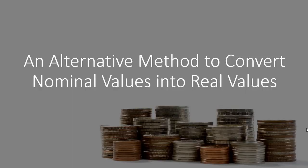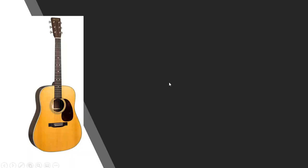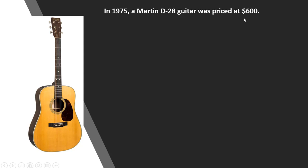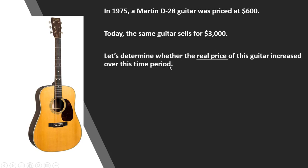In this video we're going to look at an alternative method to convert nominal values into real values — we're not going to use a consumer price index. In 1975 a Martin D28 guitar was priced at $600, and today the same guitar sells for $3,000. Let's determine whether the real price of this guitar increased over this time period.